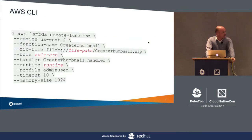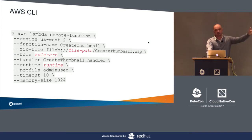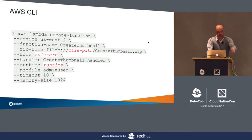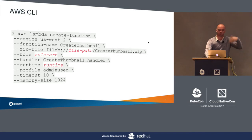The AWS CLI looks like this: lambda create-function, specify a region, function name, a zip file, a runtime which is the language, and so on. Google Cloud Functions is very similar. Azure has Azure Functions, and there's also Apache OpenWhisk. All those solutions have a CLI.